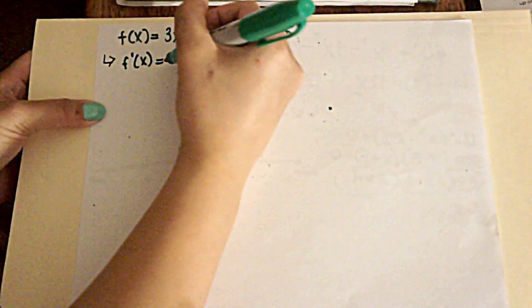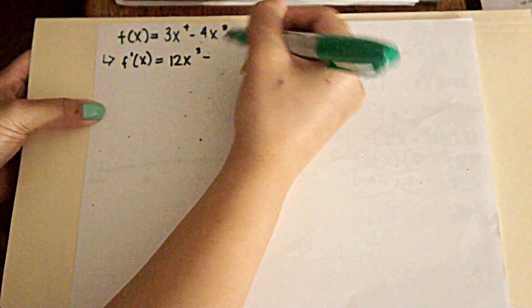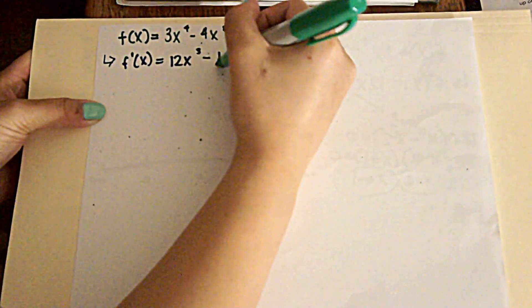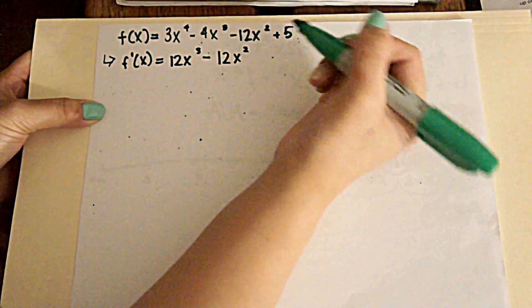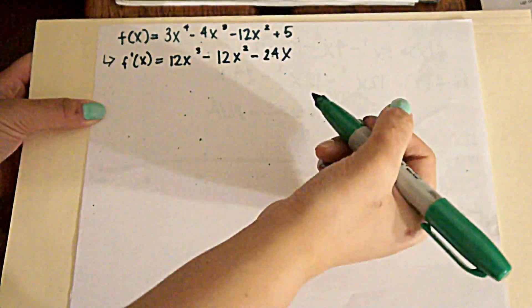Bring the 4 down in front of the 3s, 12x to the 3rd minus, again, 3 down to the 4, 12x squared minus 24x. And that's that.